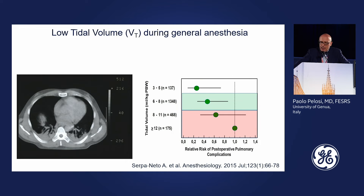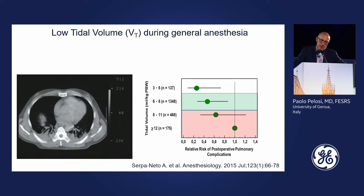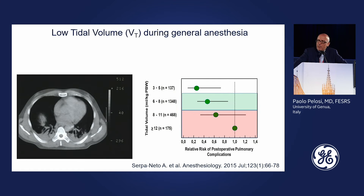This is a typical CT scan of a patient showing atelectasis in the dependent part of the lung, a cranial shift of the diaphragm, and a reduction in lung volume. Mixing data from the largest trials, a reduction in tidal volume to 6 to 8 mL/kg seems to be associated with a reduction in the risk of developing postoperative pulmonary complications after surgery.